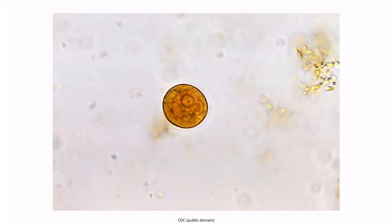This image shows an Entamoeba cyst, and we don't really see any RBCs in it. So don't be thrown off if you see a cyst without any RBCs. You generally only see red blood cells within the cytoplasm of trophozoites, not the cyst form.